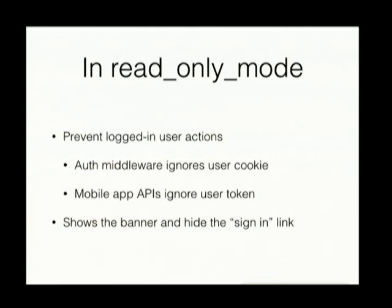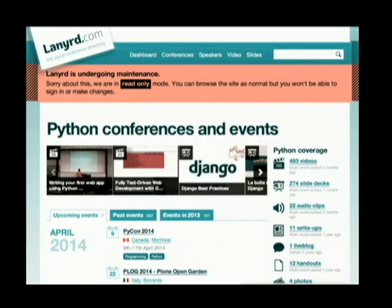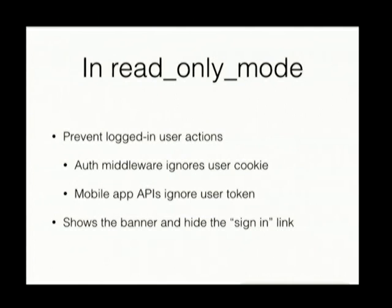The way this works is really simple. When the read-only mode feature flag is turned on, we do essentially two things. First, we start ignoring cookies — normally a piece of middleware looks at their cookie and sets up request properties; when the feature flag's on, we just ignore their cookie entirely and behave as if they're signed out. Second, we stick a banner at the top of the page and hide the link to sign in. Third, our mobile APIs that power our iPhone and Android apps also start ignoring the user token and behave as if the user is anonymous. This ended up being about 30 lines of code in the code base, and it gave us the flexibility to throw the site into read-only mode and make giant changes under the hood without going offline.